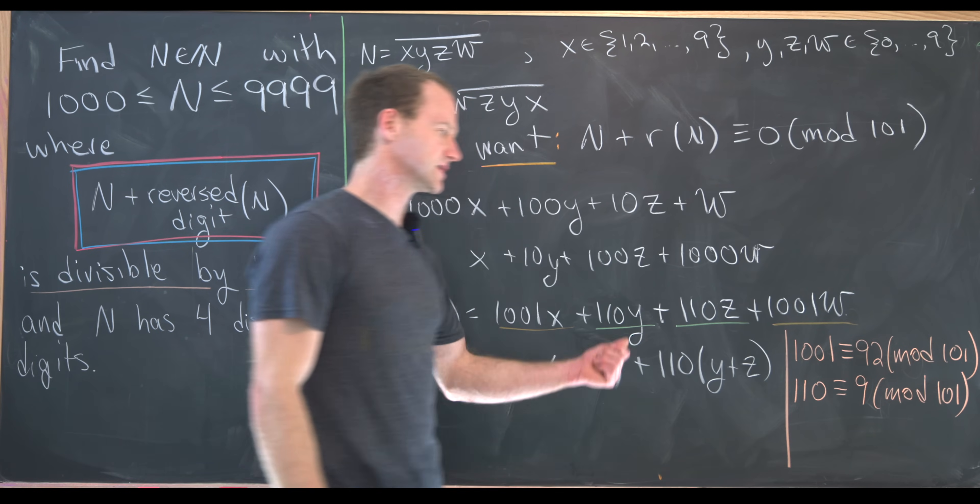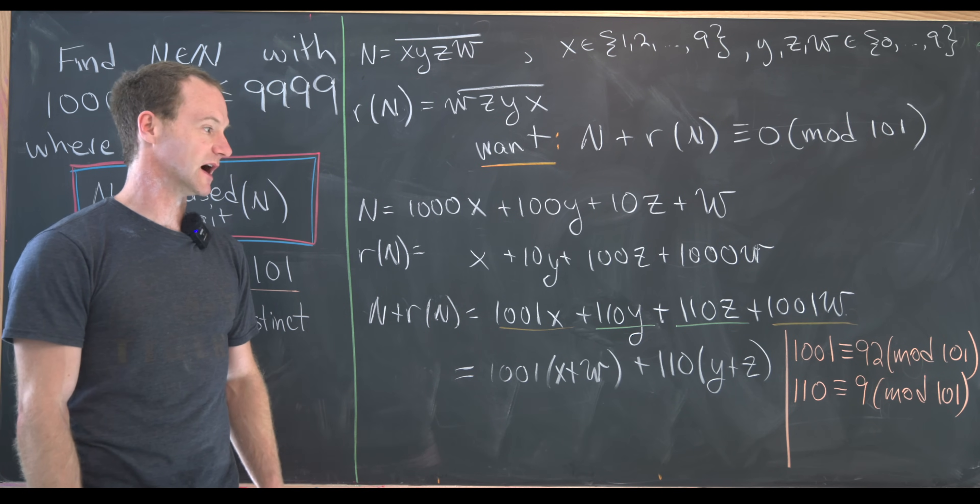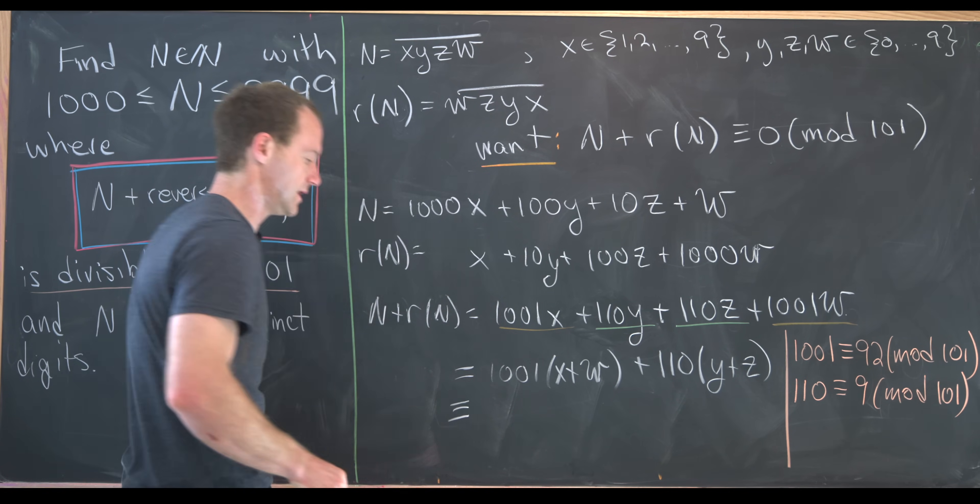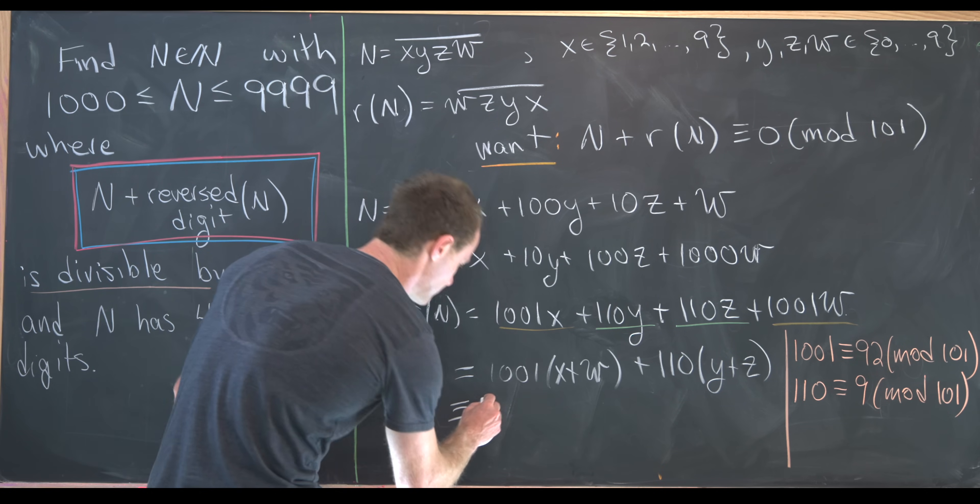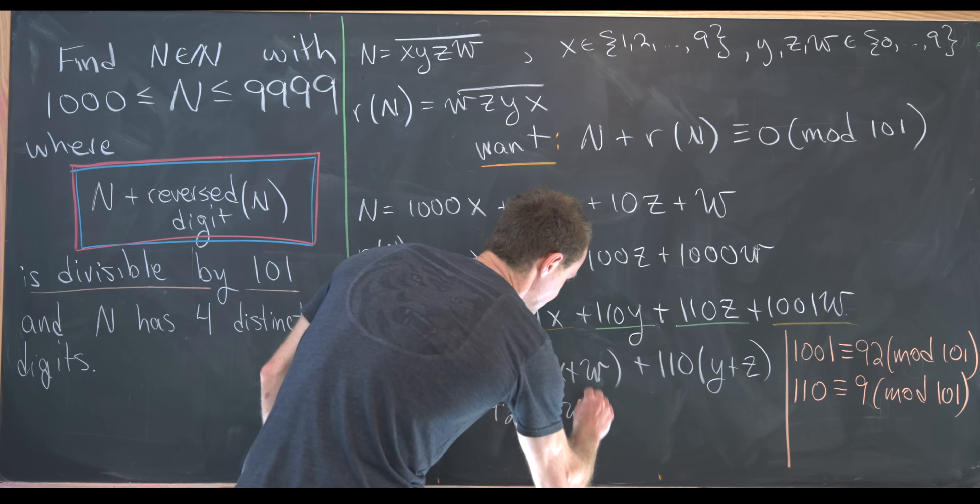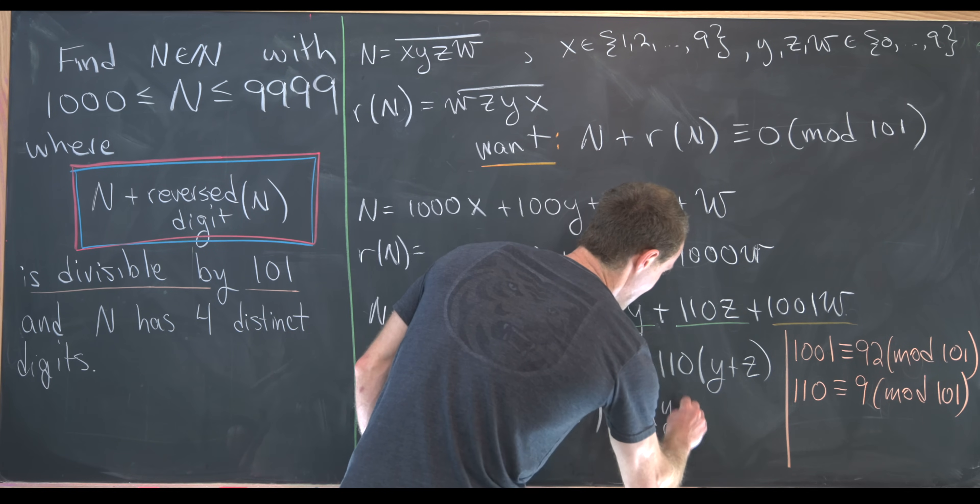And then furthermore, 110 is congruent to 9 mod 101. And that's pretty clear because if we divide 110 by 101, we get a quotient of 1 and a remainder of 9. But now if we reduce this mod 101, we'll see that this is congruent to 92 times X plus W plus 9 times Y plus Z.